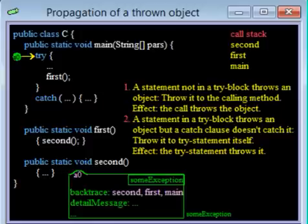In our example, the try statement is not in a try block, so rule one is used. Object A0 is thrown to the caller of method main, which is within the Java system itself. The call of method main within the system is within the try block of a try statement that catches all throwable objects.